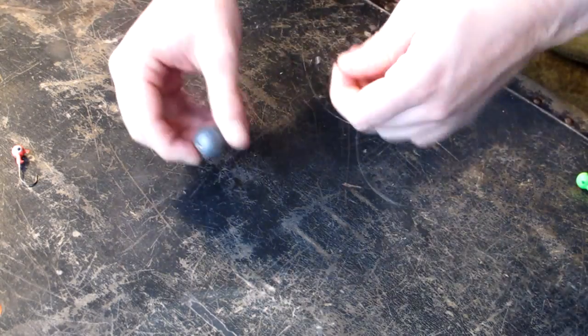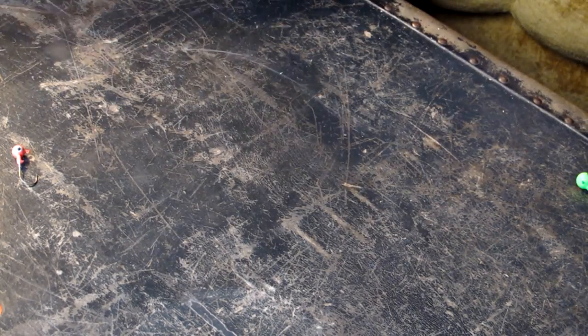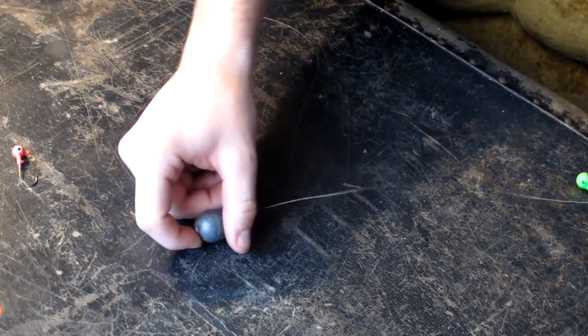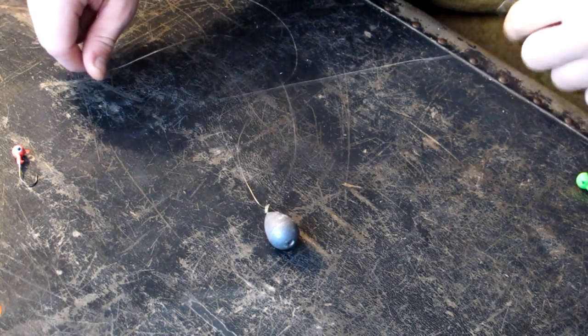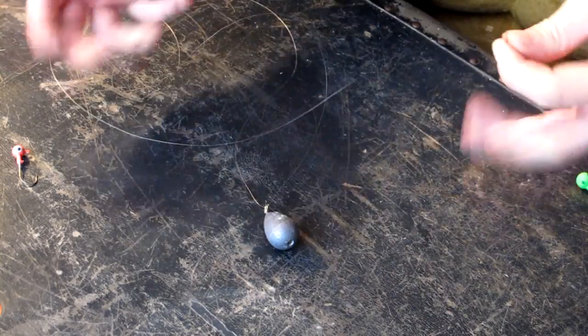Here is your rig. Line comes from the fishing pole to the weight. Smaller piece of line from the weight to the hook. Weight sits on the bottom, and the hook just kind of dangles in the current. And then the fish attack. And you win.